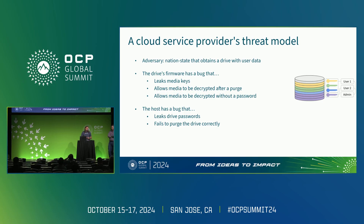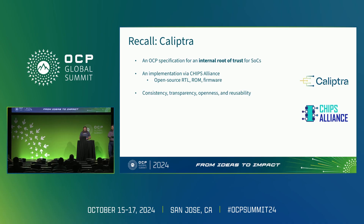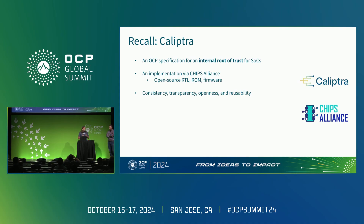Some of you may have heard of something called Calyptra before. It's the internal root of trust for identity and measurement. We're working through Lock on how to solve these requirements. A lot of the needs we have for securely managing encryption keys, Calyptra solves some of these already. So can we build on something that was in Calyptra?